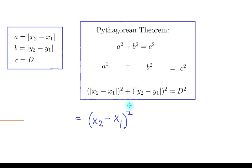Plus the same thing for this expression, so we can drop down the absolute values. Therefore, (x₂ - x₁)² + (y₂ - y₁)² = D².